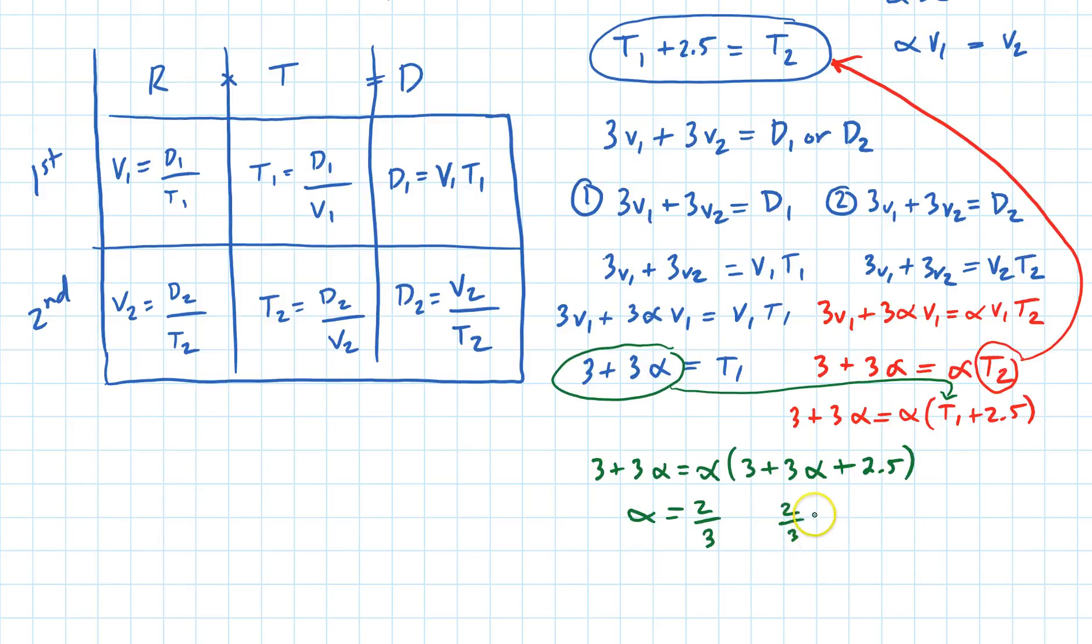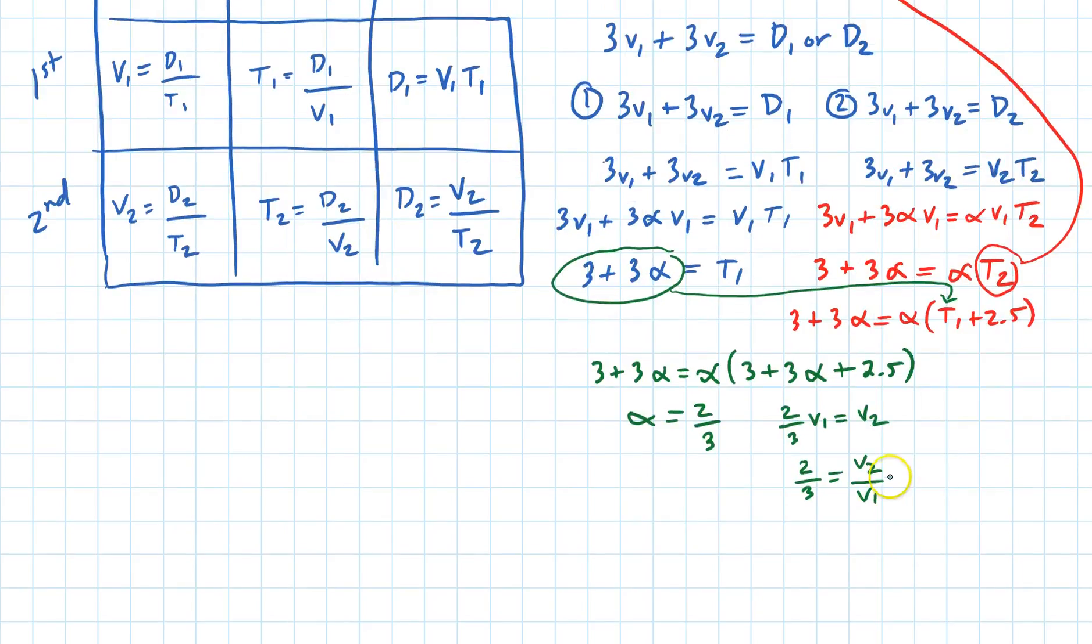So two thirds times V1 equals V2, or two thirds equals V2 over V1. If we notice here, V2 is equal to D2 over T2 and V1 is D1 over T1.